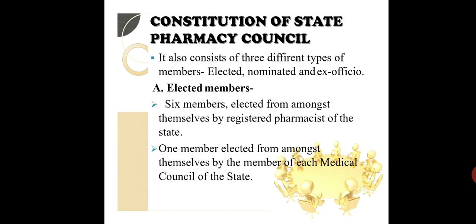The state pharmacy council also consists of 3 different types of members — elected, nominated, and ex-officio — the same as we discussed earlier for the central council. In the elected category, 6 members are elected from amongst themselves by registered pharmacists of the state, and one member is elected from amongst themselves by the members of each medical council of the state.